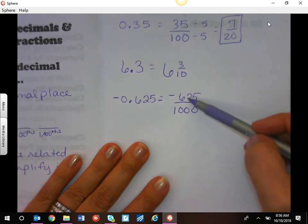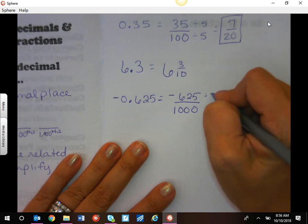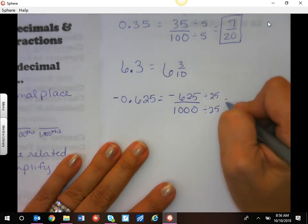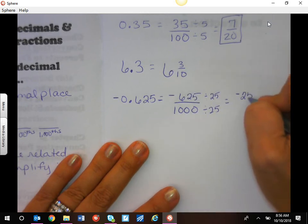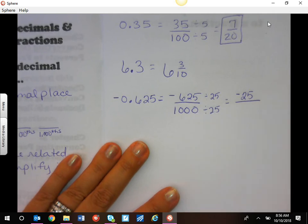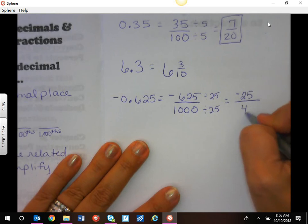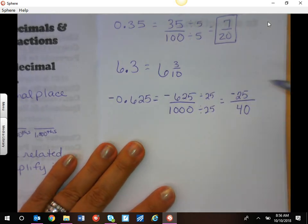Well, I know that if I think of quarters and money, I can simplify this by 25. So when I do that, don't forget to bring your negatives. There are 25 quarters in six dollars and 25 cents. There are 40 quarters in ten dollars, but that still reduces more.